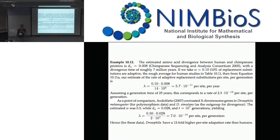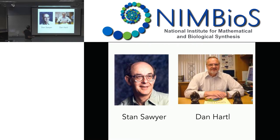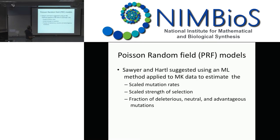Next, Poisson random fields. The McDonald-Kreitman methods take observed data counts and do simple statistics on them. That idea was expanded by Stan Sawyer and Dan Hartl, both at WUSTL — unfortunately Stan passed away a couple of years ago — to the idea of a Poisson random field. In a McDonald-Kreitman approach, you estimate the excess number of substitutions and therefore alpha, the fraction of the excess divided by the total, assumed to be adaptive. In a Poisson random field approach, you estimate the scaled mutation rate, the scaled strength of selection, and then compute the fraction of deleterious, neutral, and advantageous mutations.